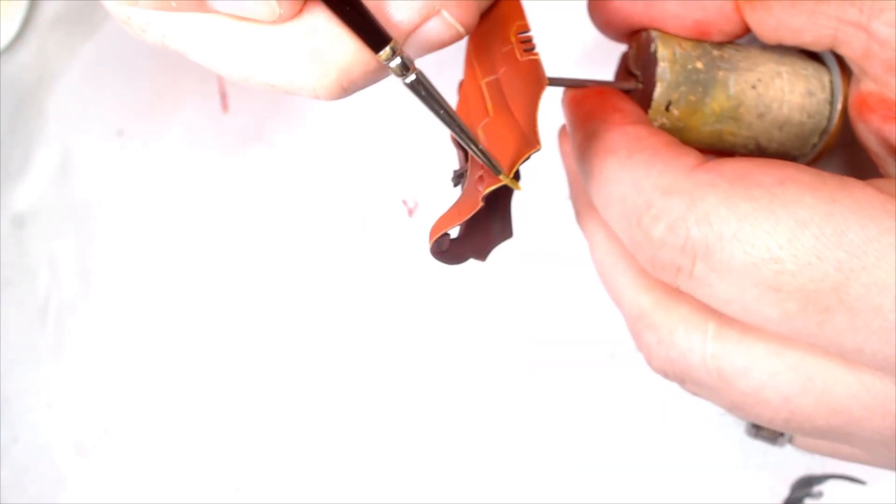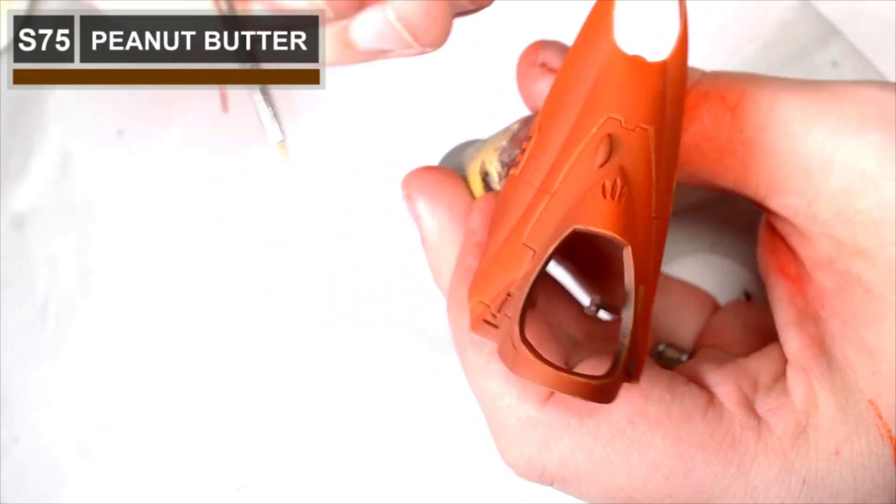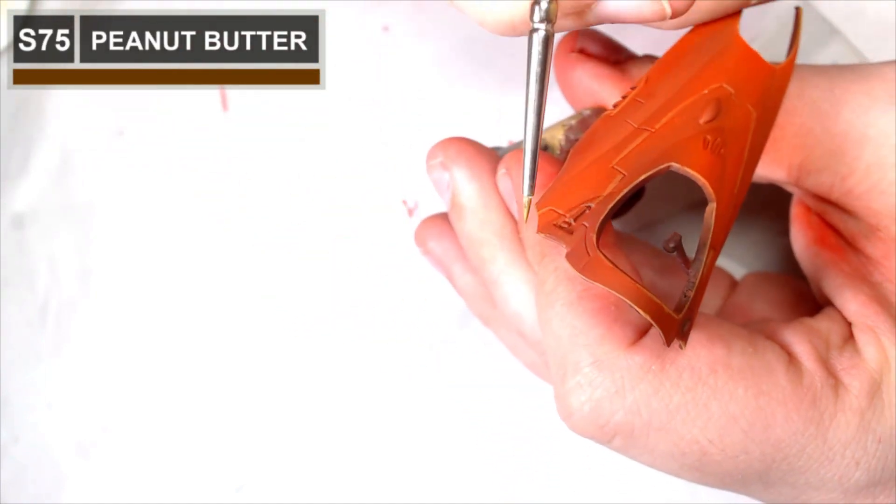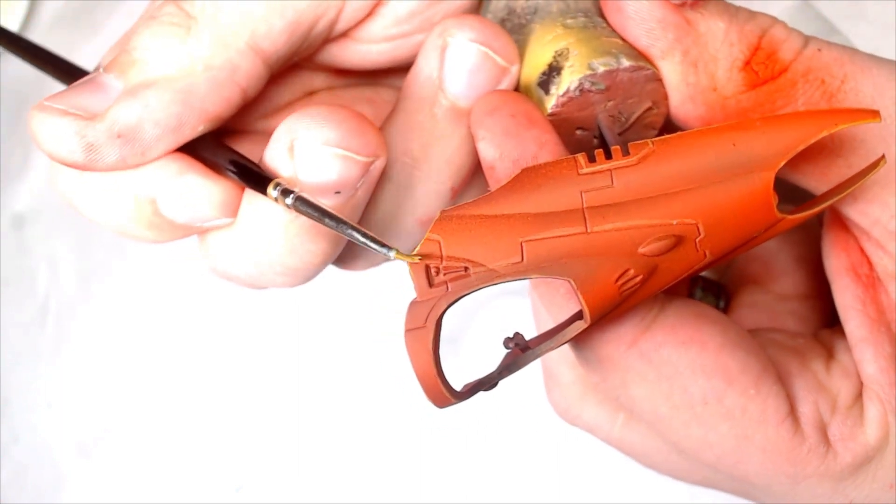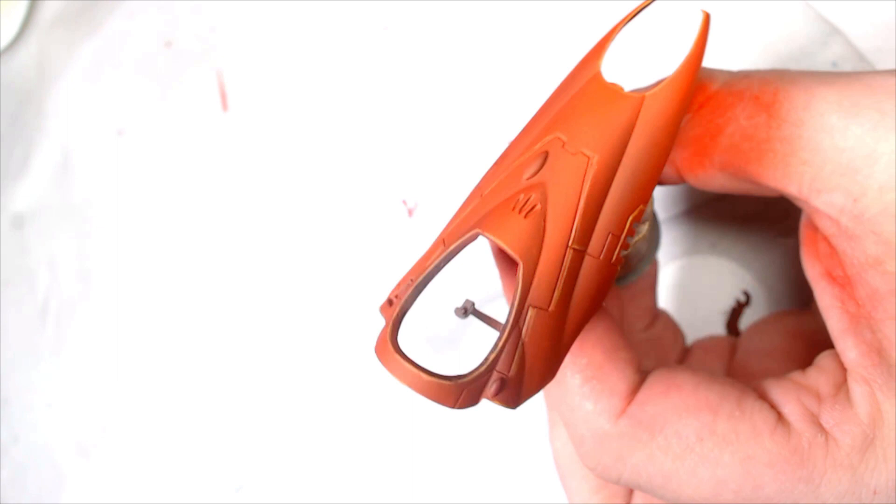So now I'm picking the corners now, and this is Peanut Butter by Scale 75. There's something on the lines of a dusty yellow, so maybe Zandri Dust would work from GW.